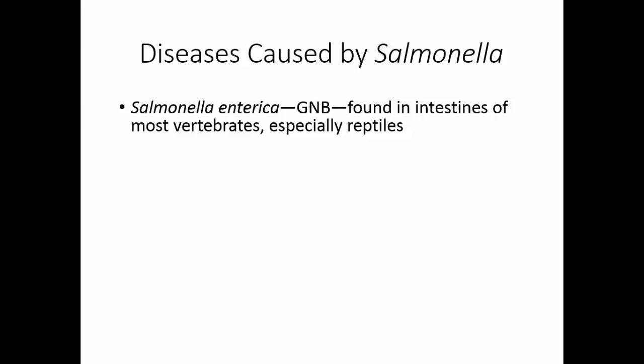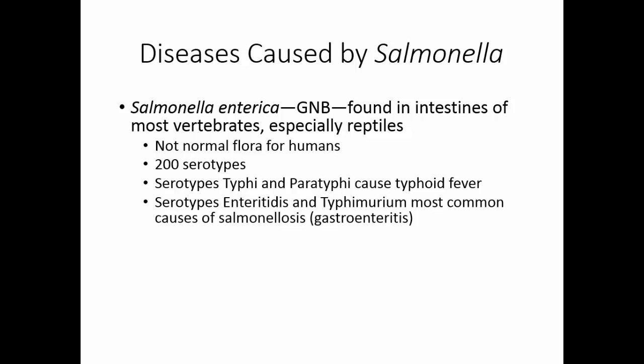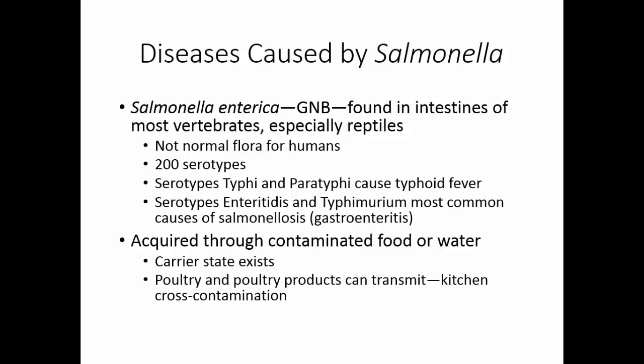There are two major diseases caused by Salmonella. Salmonella enterica is a gram-negative bacillus found in the intestines of most vertebrates, especially reptiles, but it is not normal human flora. There are over 200 serotypes. The serotypes typhi and paratyphi cause typhoid fever. The serotypes enteritidis and typhimurium are the most common causes of salmonellosis, a gastroenteritis. Salmonella is acquired through contaminated food or water, and a human carrier state exists — the most famous carrier was Typhoid Mary. Poultry, poultry products, and reptiles kept as pets can also be sources, and kitchen cross-contamination is a concern.